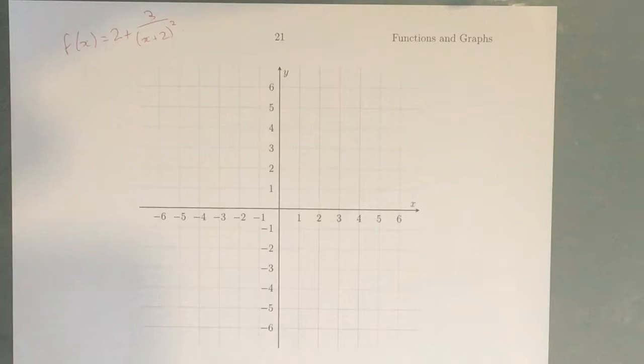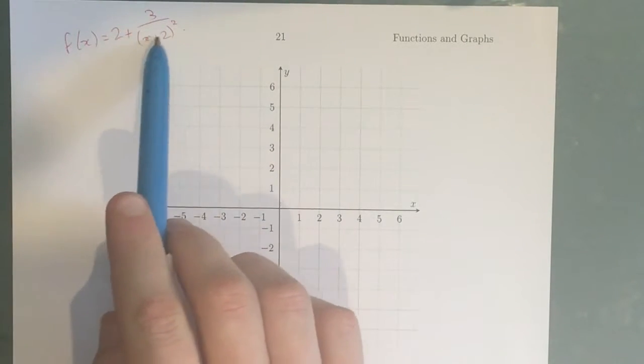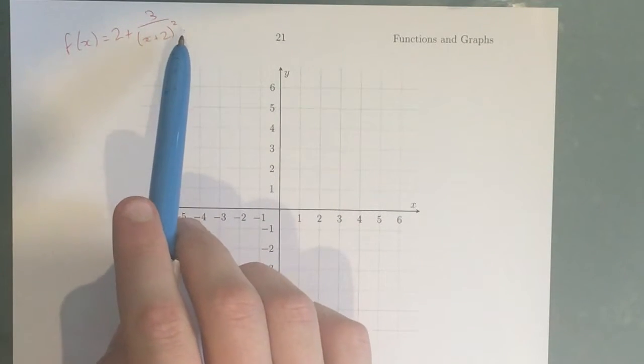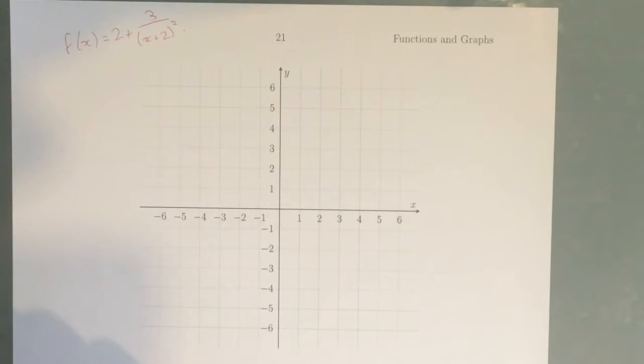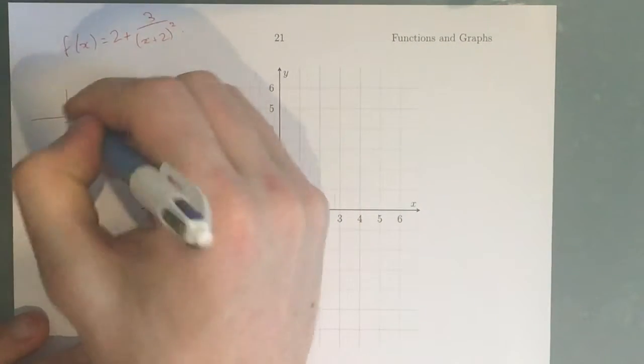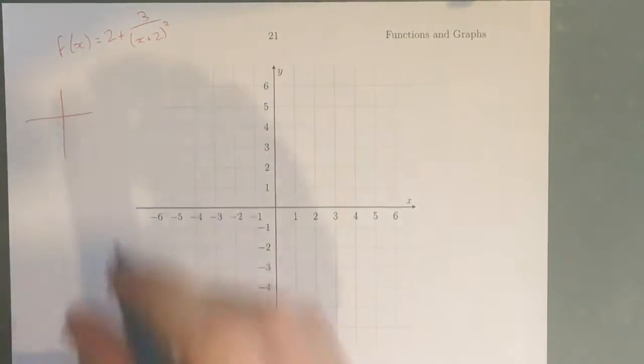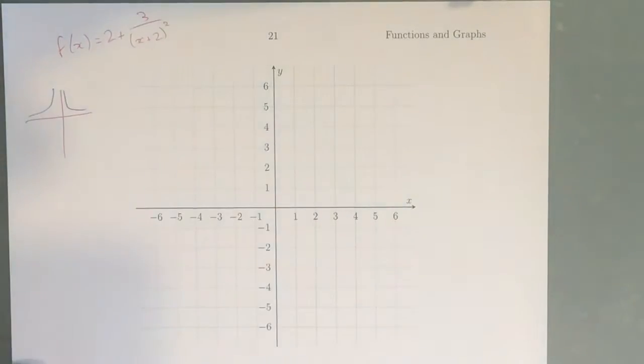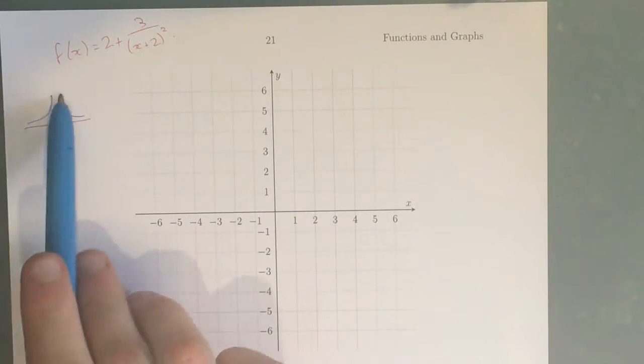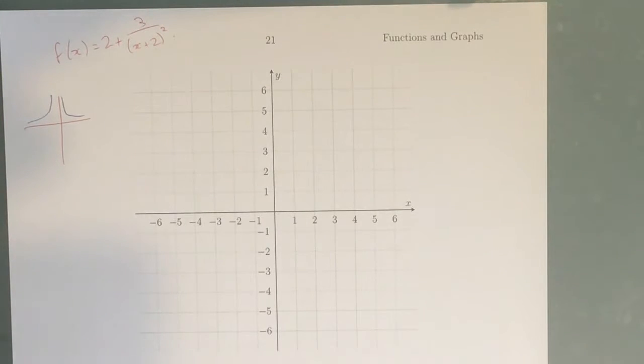Our first step for this question is actually recognizing what kind of graph this is. Because we've got a number over x squared, that's actually what's called a truncus, which has the general shape like this. Sort of looks like a tree trunk. You've got a vertical asymptote and a horizontal asymptote that the truncus has to follow.